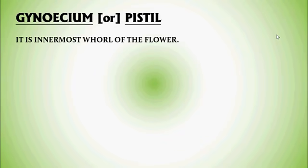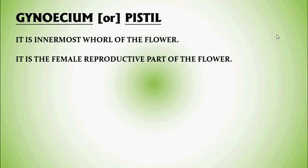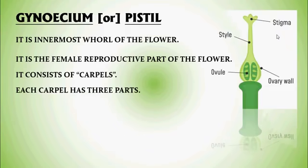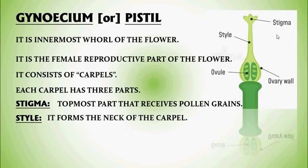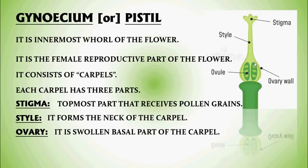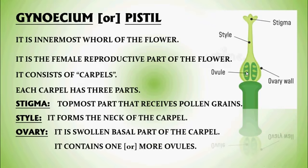Gynoecium or Pistil — it is the innermost whorl of the flower and is the female reproductive part. It consists of carpels. Each carpel has three parts: Stigma, which is the topmost part that receives pollen grains during pollination; Style, which forms the neck of the carpel; and Ovary, which is the swollen basal part of the carpel and contains one or more ovules. These ovules are also considered future seeds.